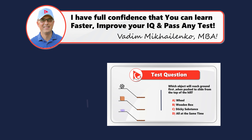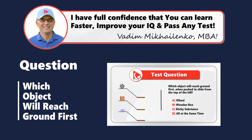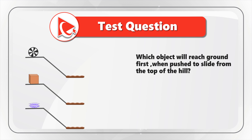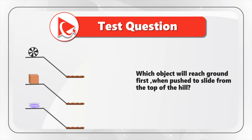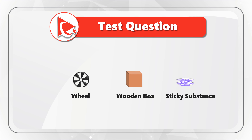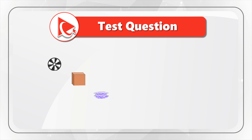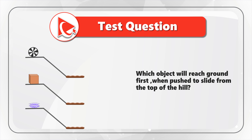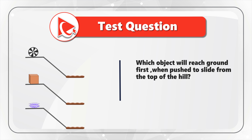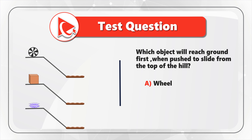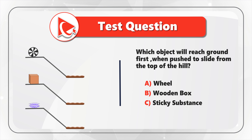Here's an amazing question which tests your knowledge of objects, their properties, and the way they move from the top of a hill down to the ground. You're presented with three different objects and you need to determine which object will reach the ground first when pushed to slide from the top of the hill. You have four possible choices: Choice A: wheel. Choice B: wooden box. Choice C: sticky substance. And Choice D: they all reach the ground at the same time.